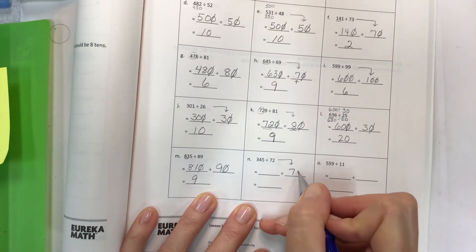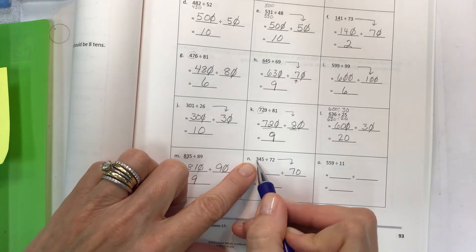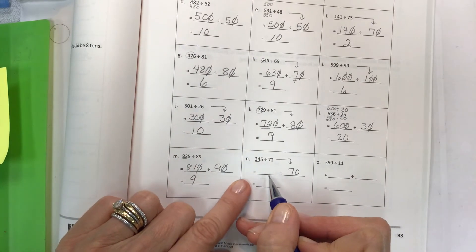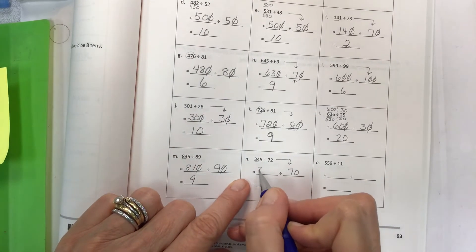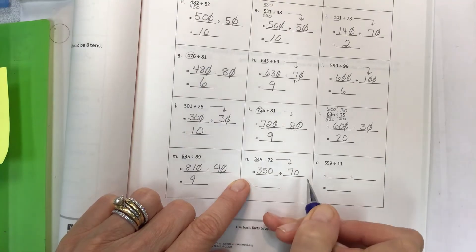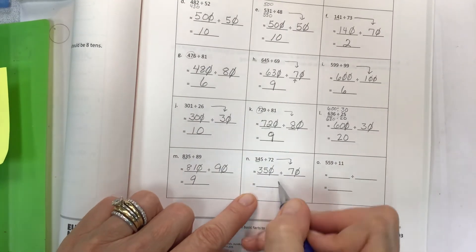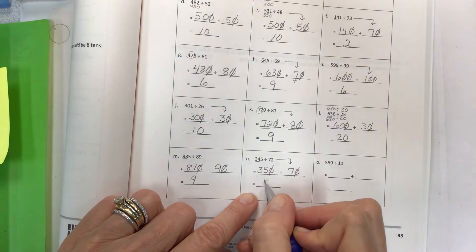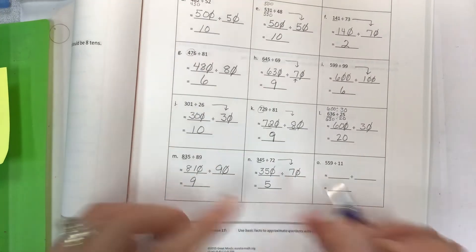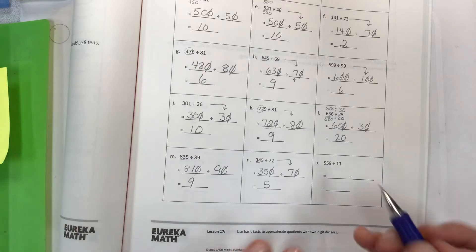Round the divisor first — let's use 70. We want something close to 34. I can use 35 because 7 times 5 is 35. With offsetting zeros, I have 35 divided by 7. There are no more zeros to bring down, so the final answer is 5.